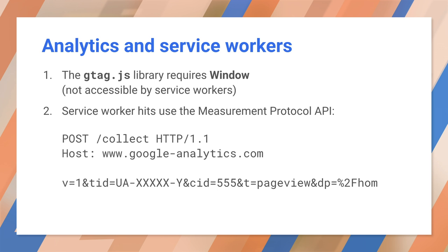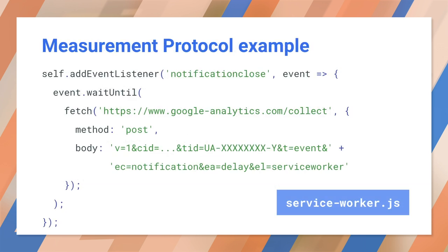This is a simple set of HTTP parameters documented at the Google Analytics site. Here's a sample of sending a notification from the service worker — it reports when the user closes the push notification. The service worker manages the notification lifecycle, so it receives a notification close event. When the event fires, the service worker sends a hit via POST with tracking ID, custom event parameters, and the required parameters for the API.